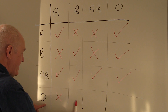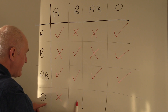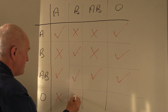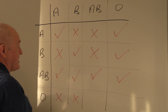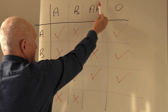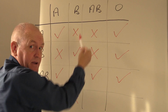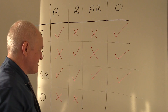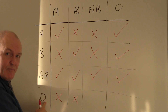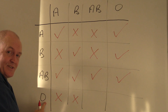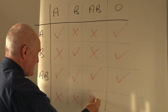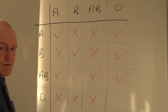B antigens will be agglutinated by the A and B antibodies in the group O blood, so we can't do that. AB will have A and B antigens to be agglutinated by the A and B antibodies in the group O blood, so that is definitely not acceptable.